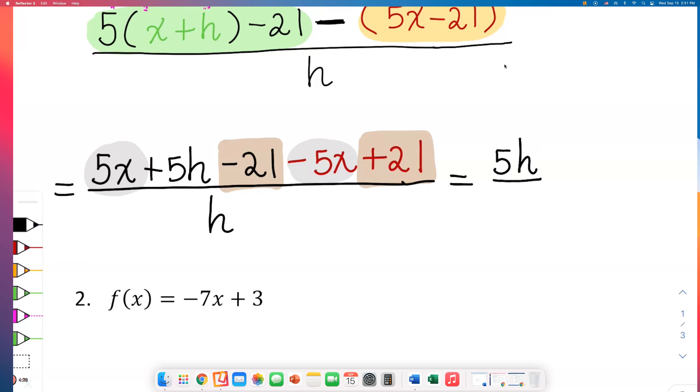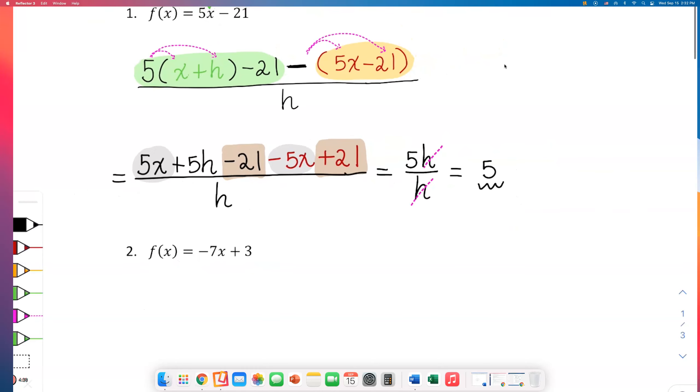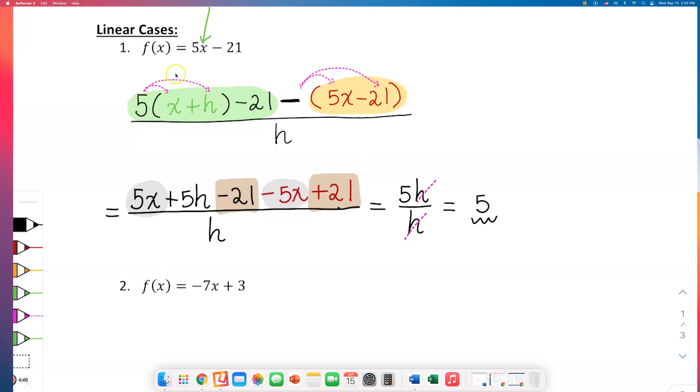The only thing that's left is 5h on top of the fraction and h in the bottom of the fraction. But hey, guess what? h can be canceled out too. So your final answer is 5. This is how you set up a difference quotient for a linear function and how you simplify.